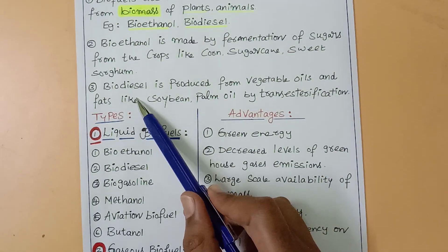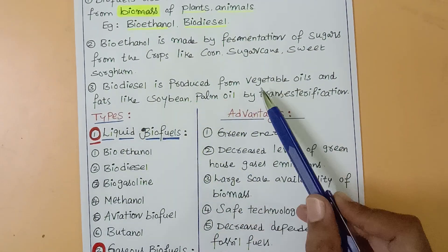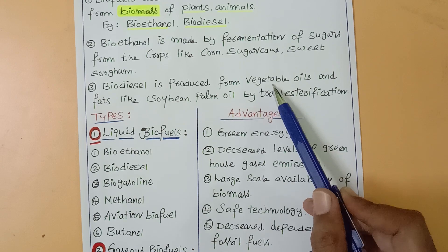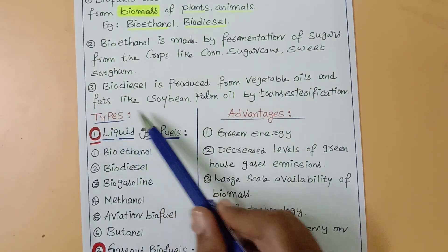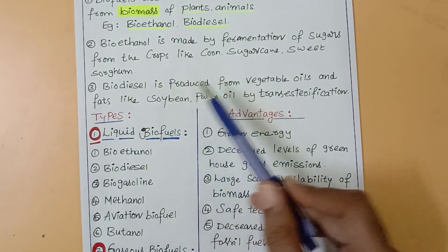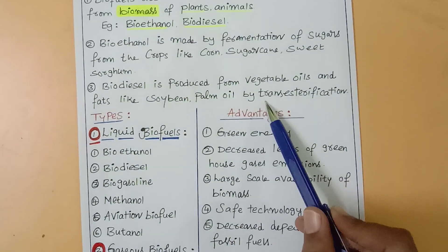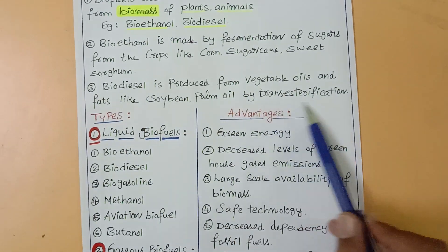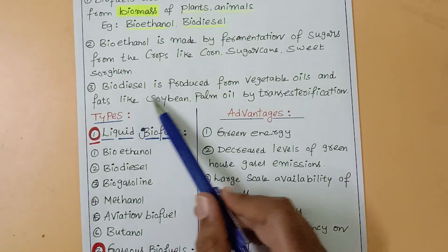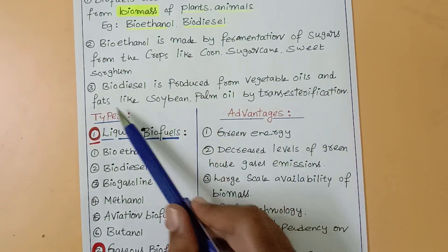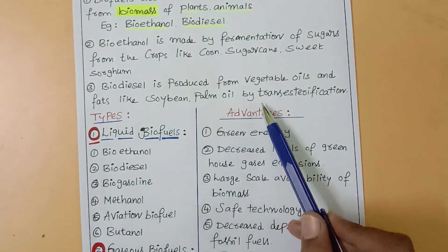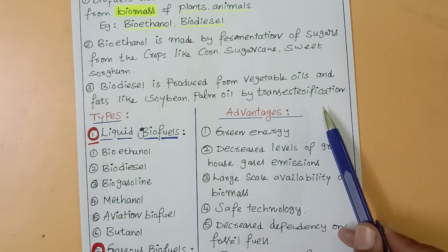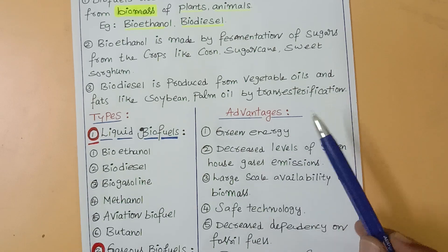Then, biodiesel is produced from vegetable oils and fats through transesterification. Biodiesel is produced from vegetable oils and fats like soybean and palm oil by transesterification.